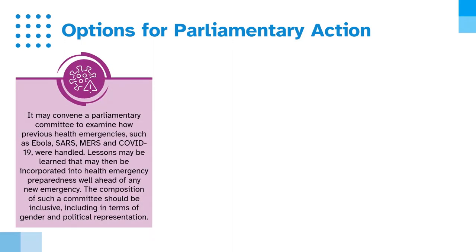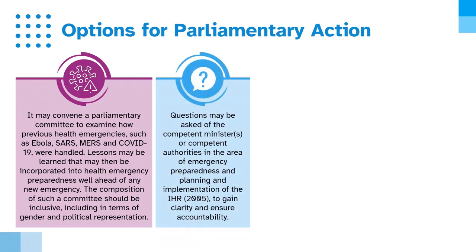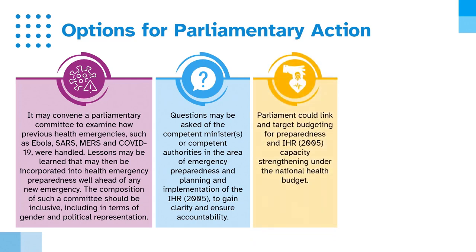Some options for parliamentary action: It may convene a parliamentary committee to examine how previous health emergencies such as Ebola, SARS, MERS and COVID-19 were handled. Lessons may be learnt that may then be incorporated into health emergency preparedness well ahead of any new emergency. The composition of such a committee should be inclusive, including in terms of gender and political representation. Questions may be asked of the competent minister or ministers or competent authorities in the area of emergency preparedness and planning and implementation of the IHR to gain clarity and ensure accountability.